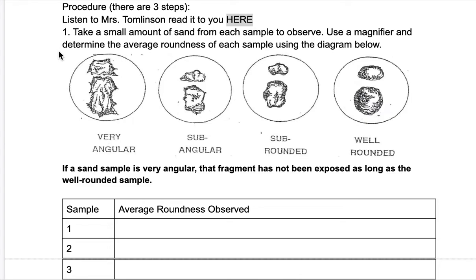You're going to use the magnifier or the microscope and determine the average roundness. We're going to look for roundness of each sample using the diagram. If the edges look very pointy, you have a very angular sample. Sub-angular means the points are a little bit less angular on the outsides. Sub-rounded is a little bit smoother. And well-rounded means the particles are very round on the edges.